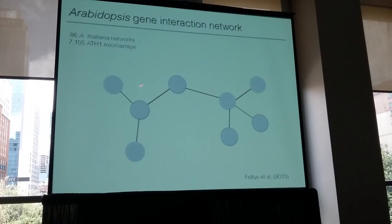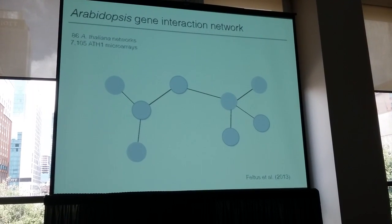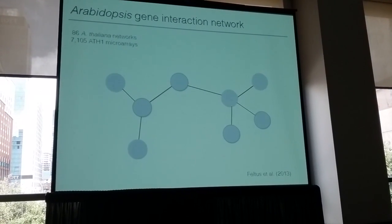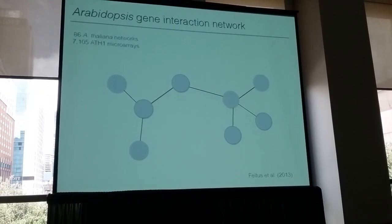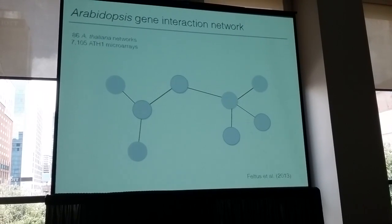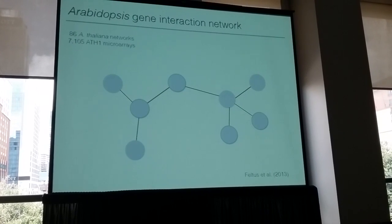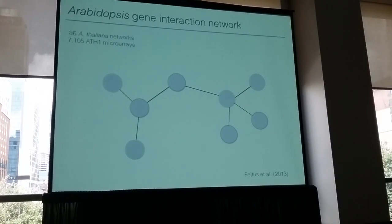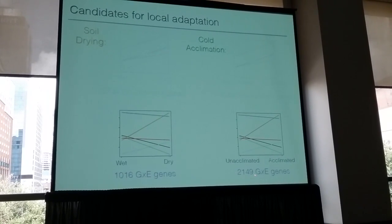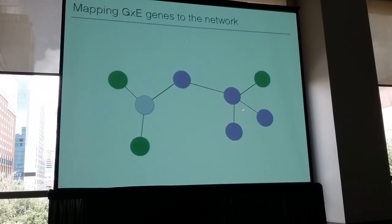We took a network from a paper by Feltis et al. 2013, where they use 7,100 microarrays to construct a gene expression network for Arabidopsis. We imagine a big matrix with 25,000 rows and 25,000 columns, where each entry is the correlation between the expression patterns of different genes. This is our measure for what the interaction network looks like in these populations. We then map our 10,000 G×E genes for drought and 2,100 G×E genes for cold onto this coexpression network.